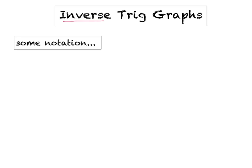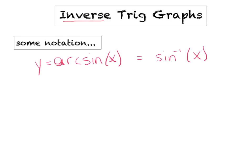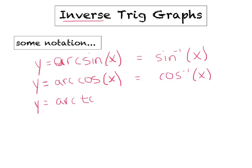There are two ways that we could write each of these. The first is y equals arc sine of x, or it could be sine inverse of x. I want you to feel comfortable with both forms of notation and recognize they mean the same thing. We've also got y equals arc cosine of x, which could be rewritten as cosine inverse of x, and arc tangent of x, which could be rewritten as tan inverse of x.